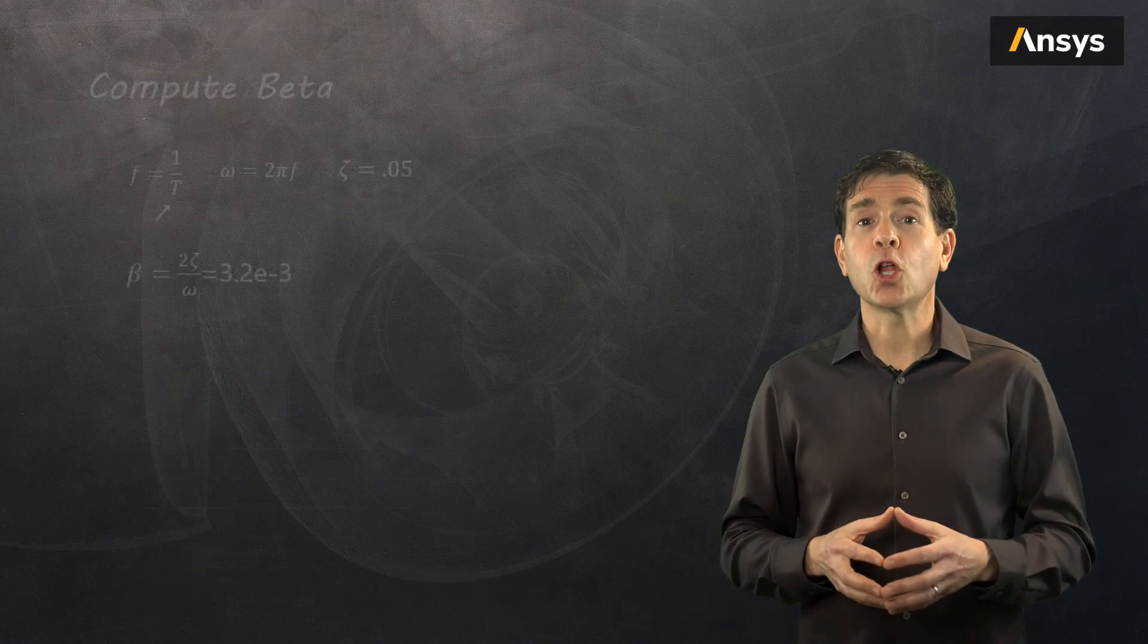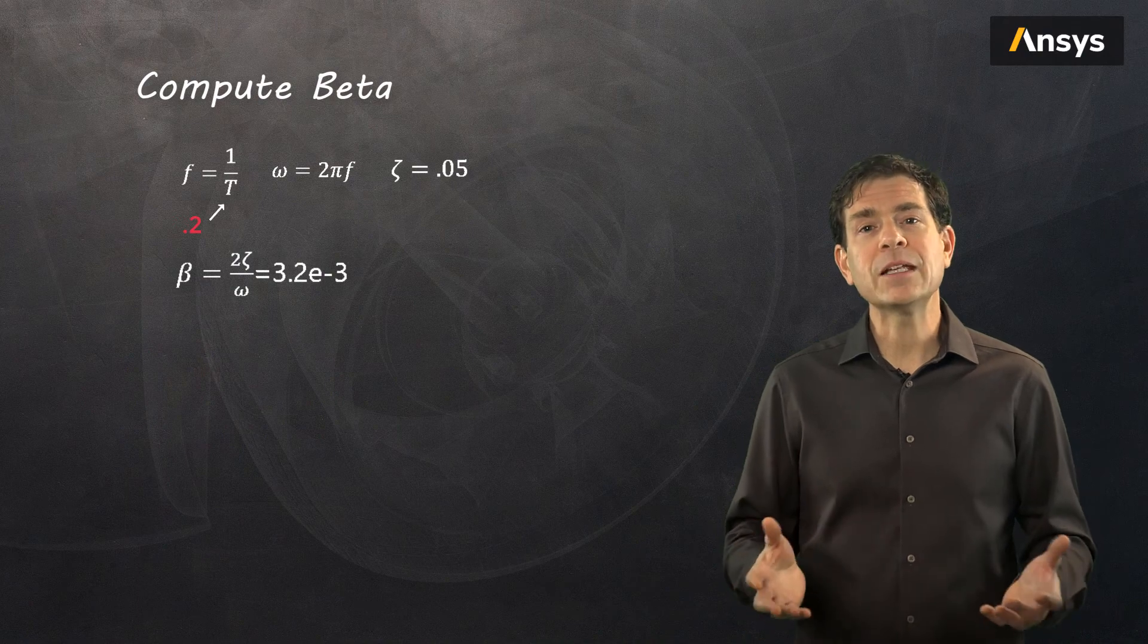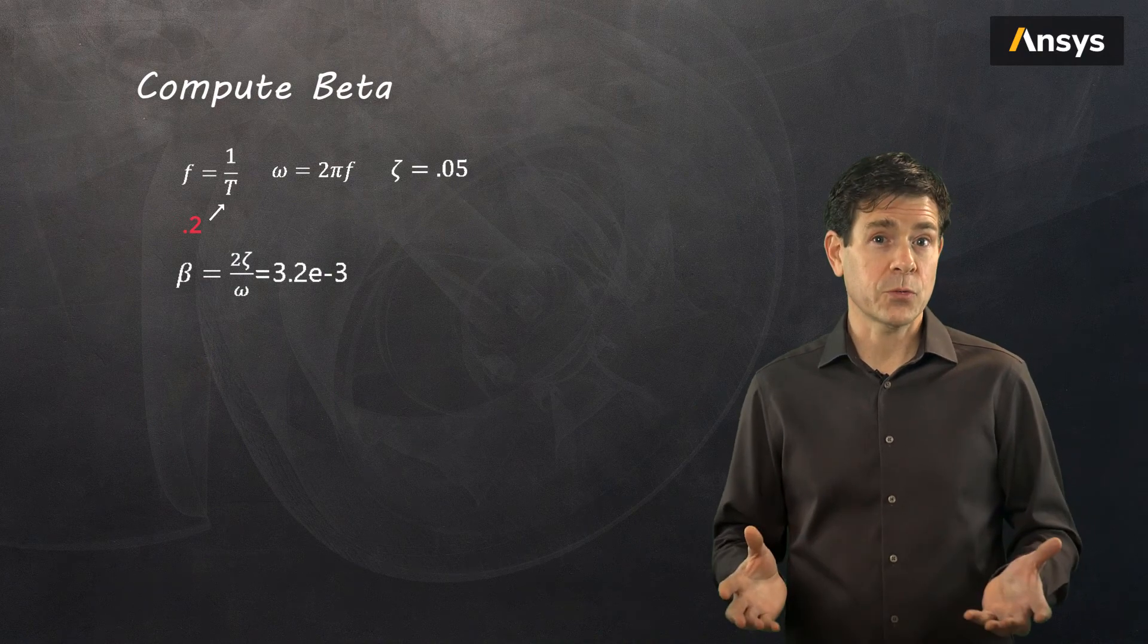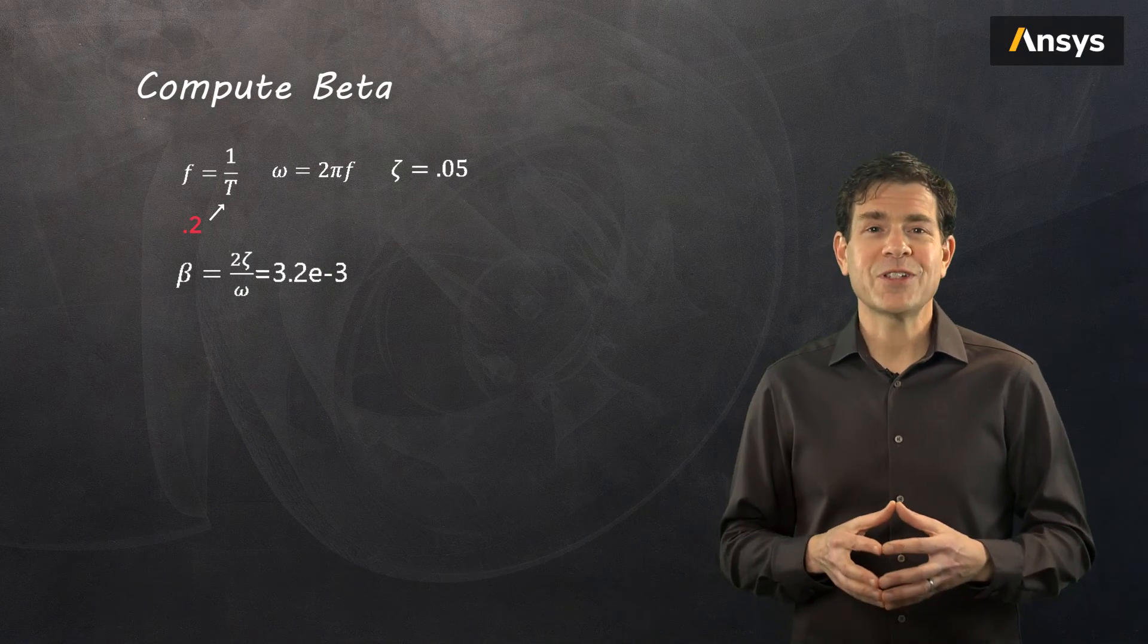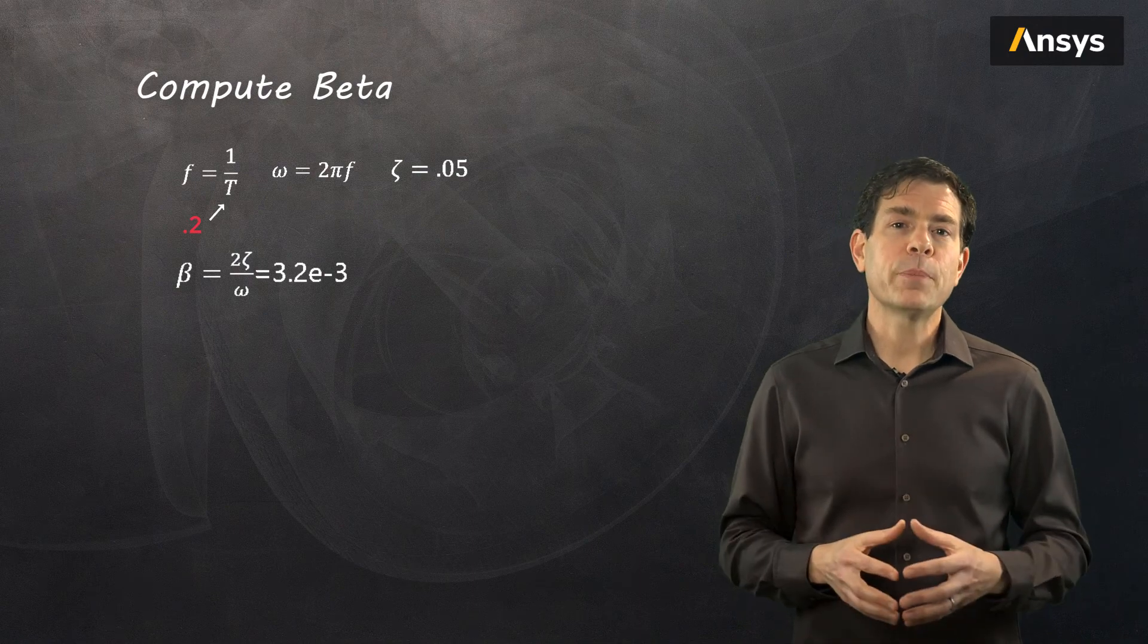We compute omega, then substituting it in along with the damping ratio, we compute beta to be about 3.2 e to the minus 3, and we specify this for the tire material. Let's now compare the results.